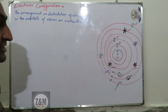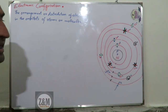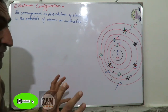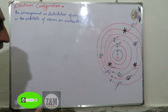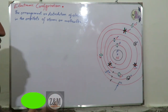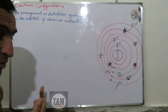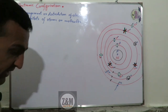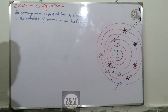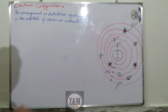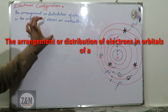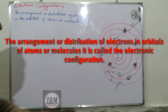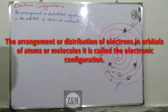This is about 7-8 minutes of lecture. I'm going to talk to you about the atomic structure. The electronic configuration is the arrangement and distribution of electrons in orbitals of atoms and molecules. It is called electronic configuration.